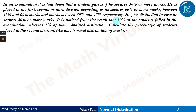The first question: in an examination, a student passes if he secures 30% or more marks. He is placed in the first, second, or third division according as he secures 60% or more marks, between 45% and 60%, or between 30% and 45% respectively. He gets distinction if he secures 80% or more marks. It is noticed that 10% of the students fail and 5% obtained distinction.